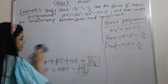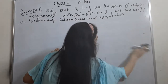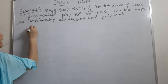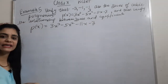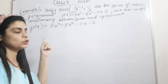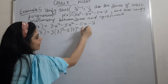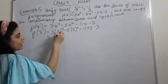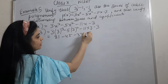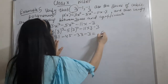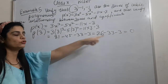Example 5: verify that 3, minus 1, and minus 1/3 are zeros of the cubic polynomial P(x) = 3x³ minus 5x² minus 11x minus 3. For verification, put x = 3: 3(3)³ minus 5(3)² minus 11(3) minus 3 equals 81 minus 45 minus 33 minus 3, which comes out to be 0. Hence verified — 3 is a zero of P(x).